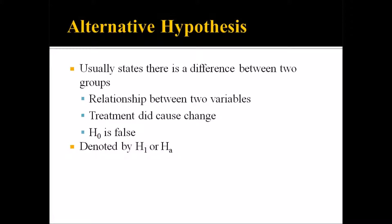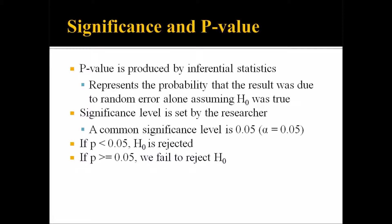Knowing that we have a null hypothesis and an alternative hypothesis, how do we test? To understand that, we have to start with the concept of a p-value. Inferential statistics — for example, a t-test — produce a p-value. It is a number that is the result of conducting an inferential statistic, and it represents the probability that the result of the statistic was due to random error alone, assuming the null hypothesis was true. For example, if a particular statistic produces a p-value of 0.02, then there is a 2% probability that the result was due to random error, again assuming the null hypothesis was true.